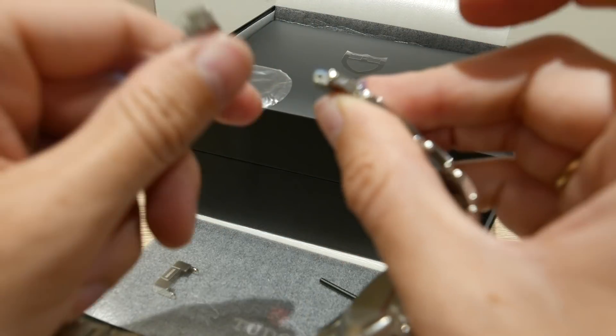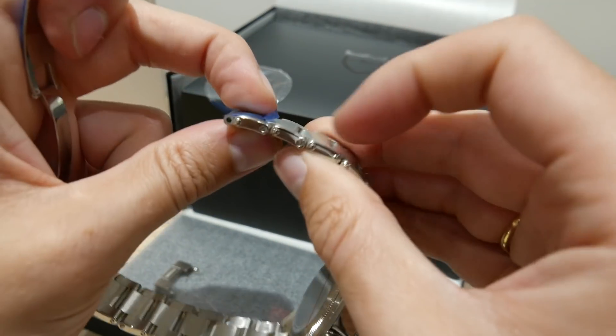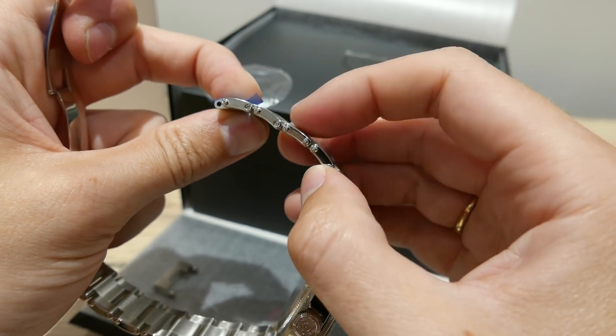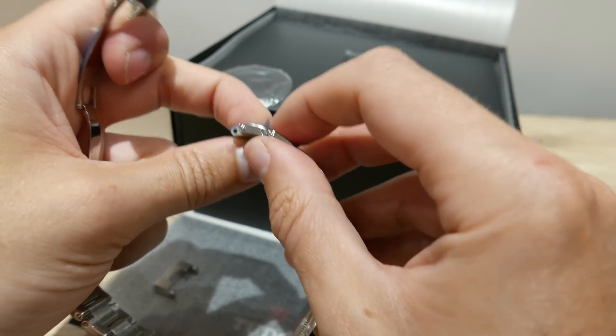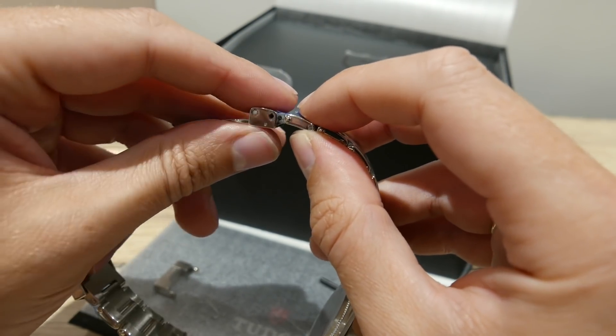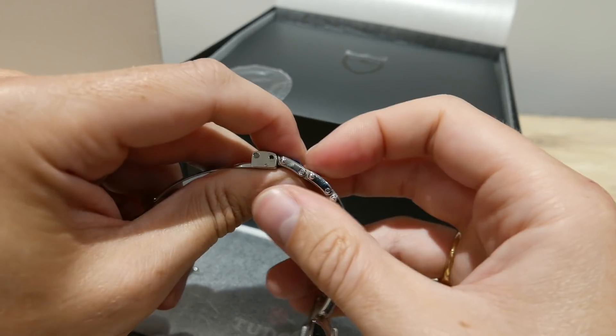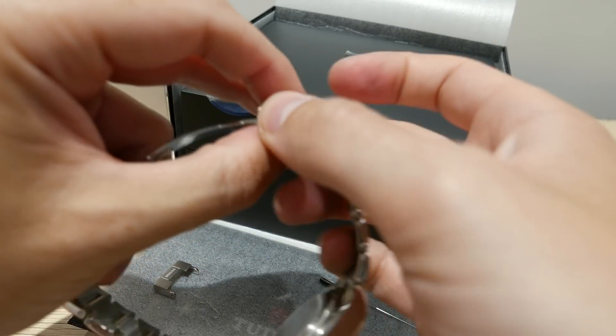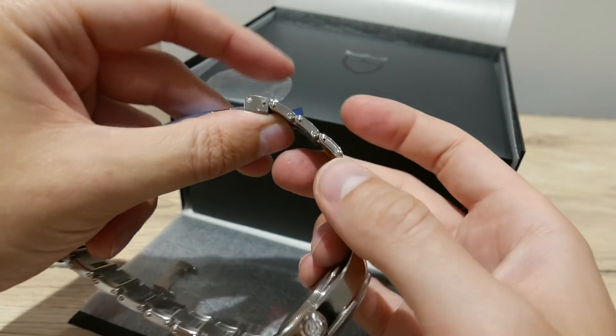So now I can remove those two links. So those can come out. And then this link here, the fixed one, that can go as this one would, into the clasp. And we would have the ability then to remove two complete links from that side and get the clasp over to the middle of my wrist.